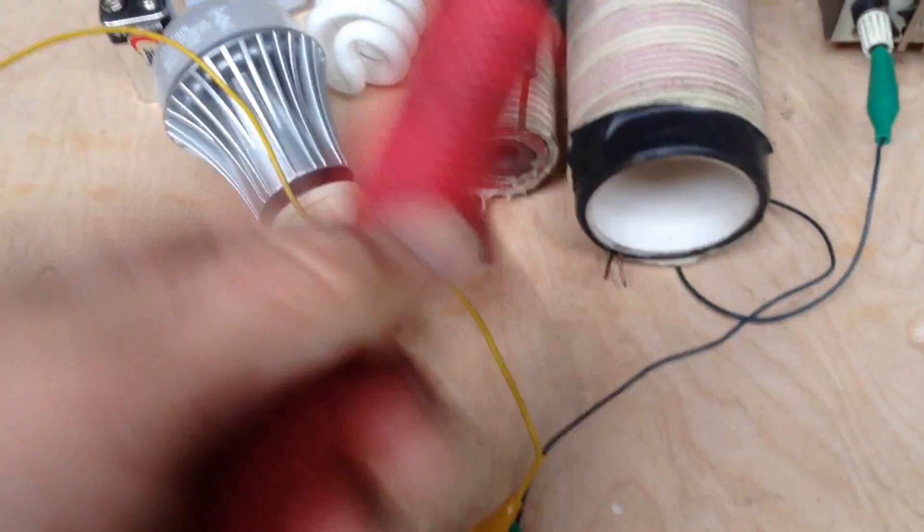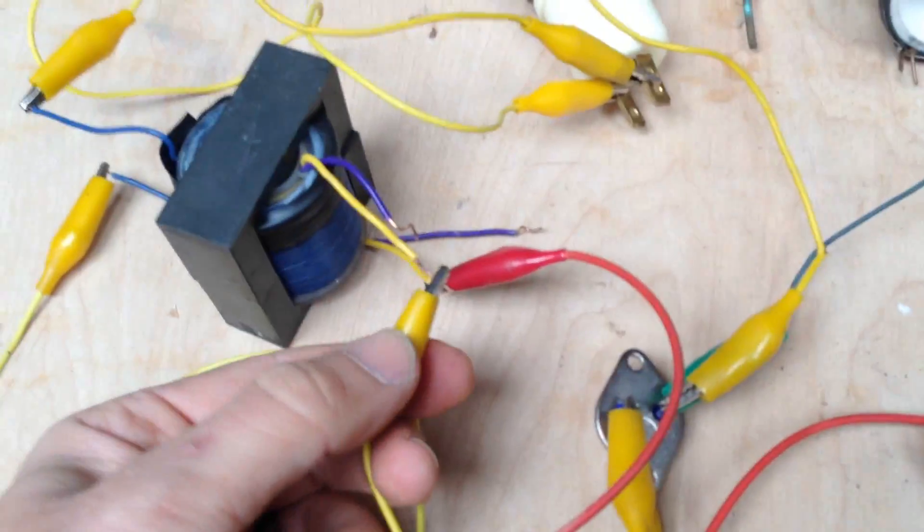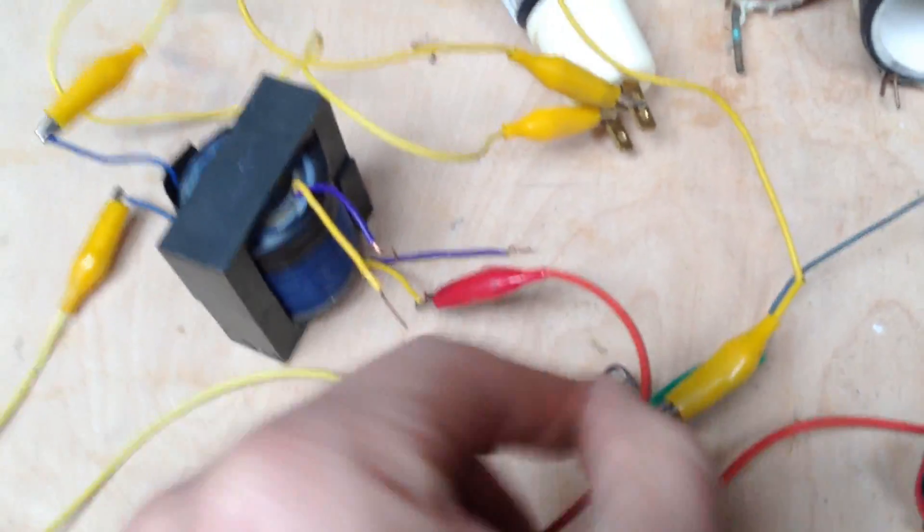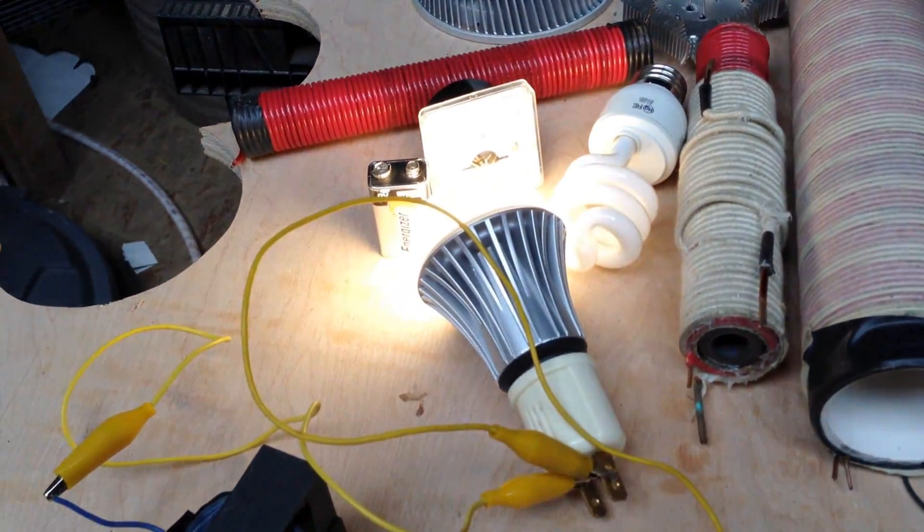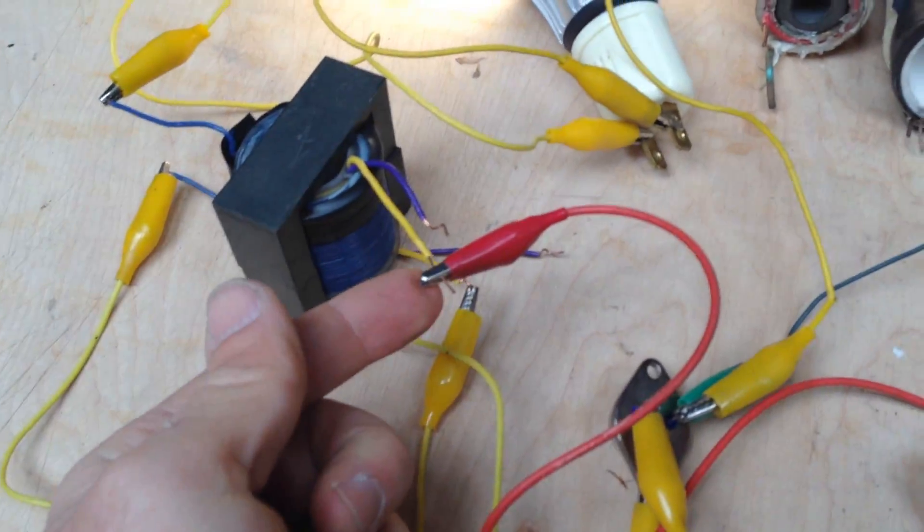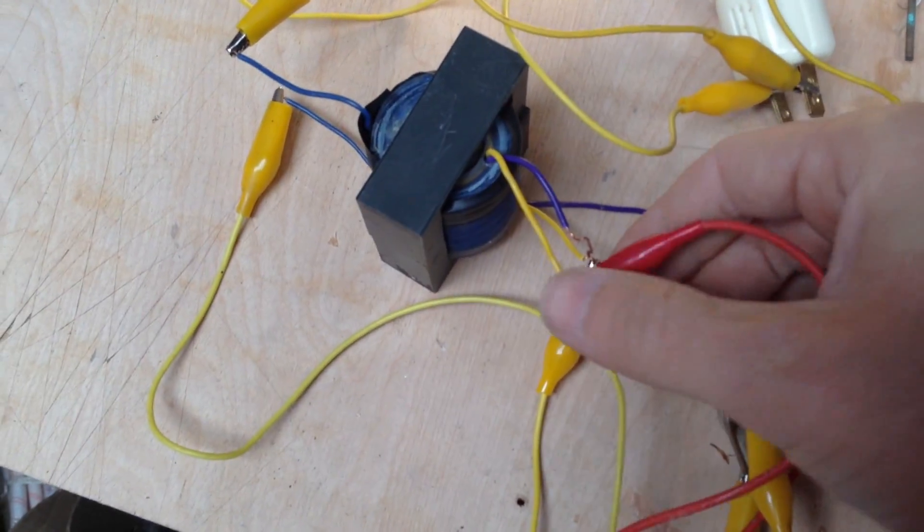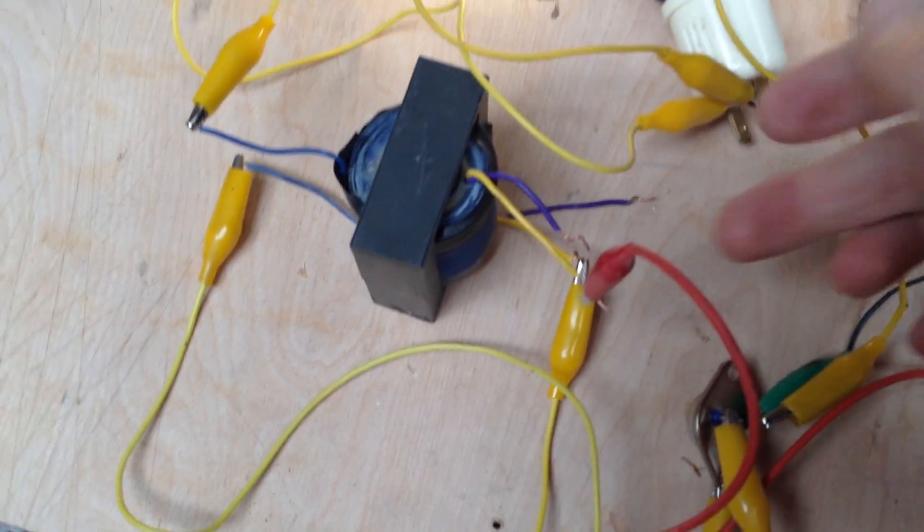So the first thing I do when that happens is I come over here to my primary windings. The primary would be your larger windings here. And I just switch the connection on the primary windings. So we're just going to reverse these connections on these wires, and you can see we've got light. Another point where a lot of people could be going wrong, you may just need to reverse the connection here.